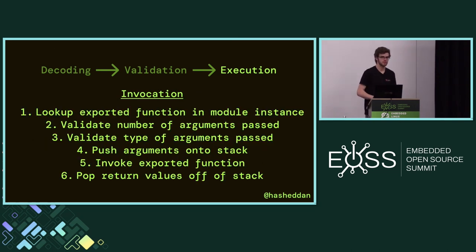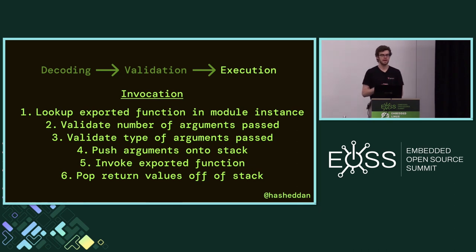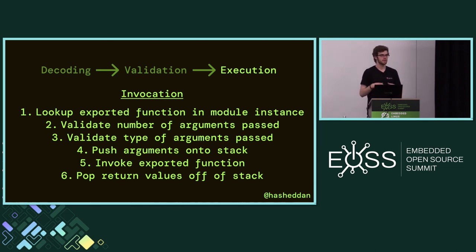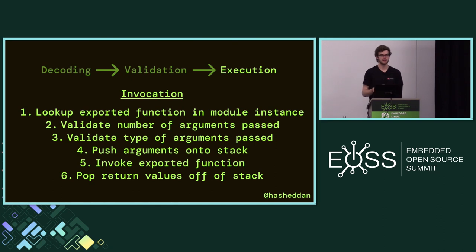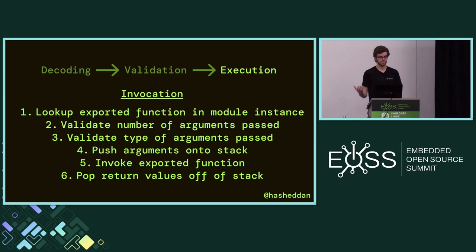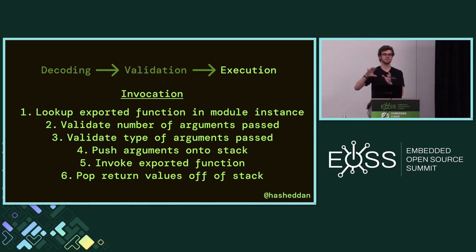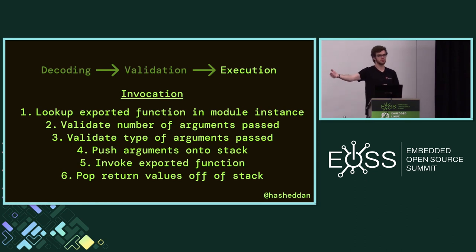In invocation, you're basically pulling an exported function out of that WebAssembly module and invoking it from the host environment. You may pass it some arguments, and if you're going to pass or receive arguments, the runtime validates the number and types of arguments. WebAssembly is a stack machine, so arguments get passed by putting them on the stack for the module instance, invoking the exported function, and then it will push the return values onto the stack, which you can pop off to get values out.